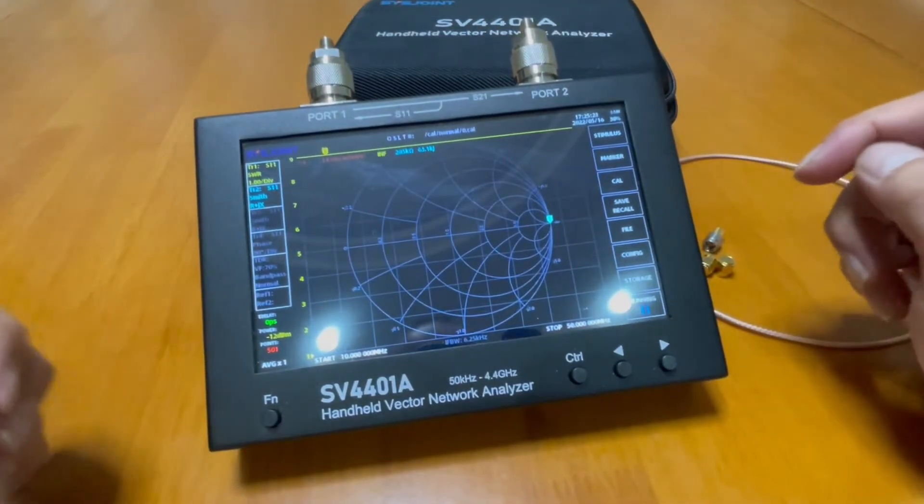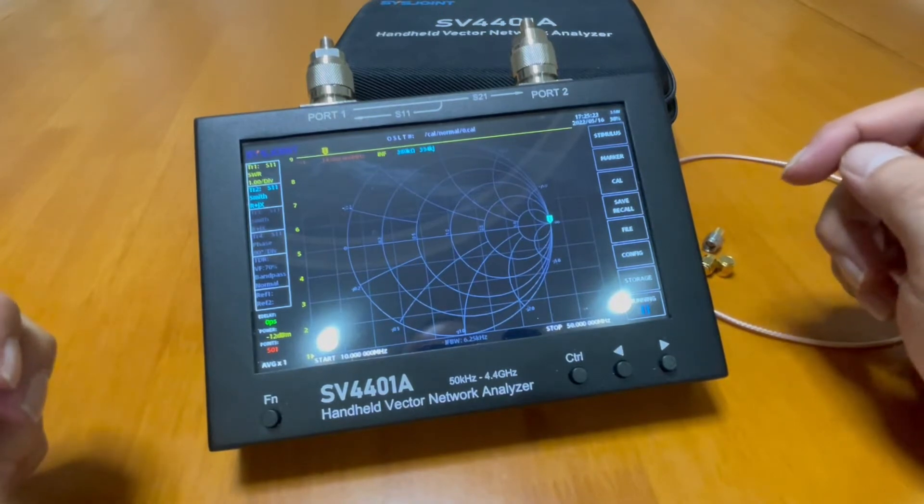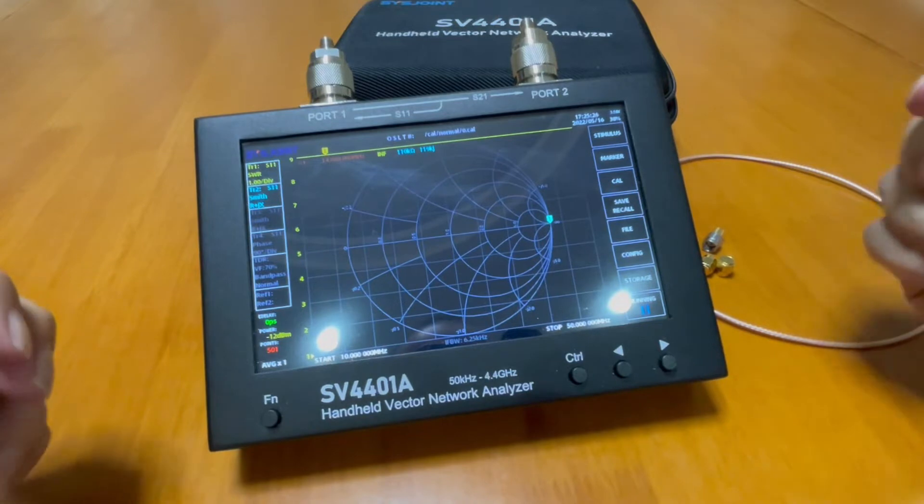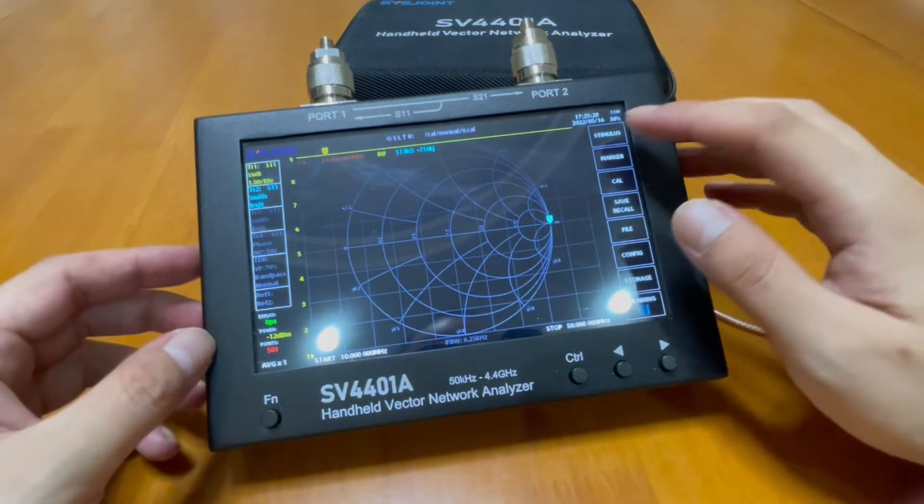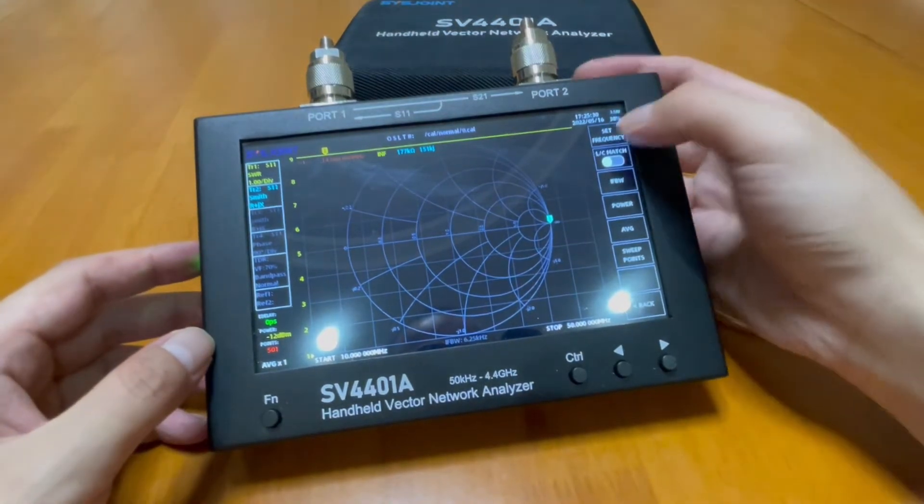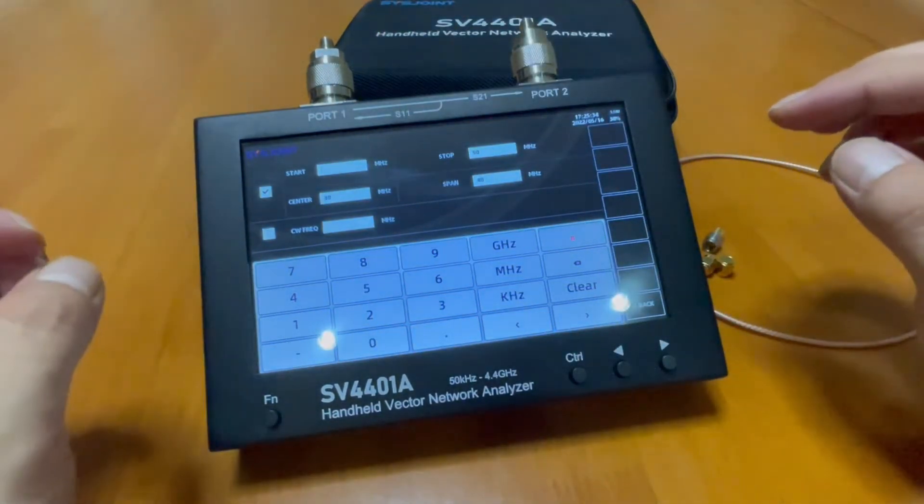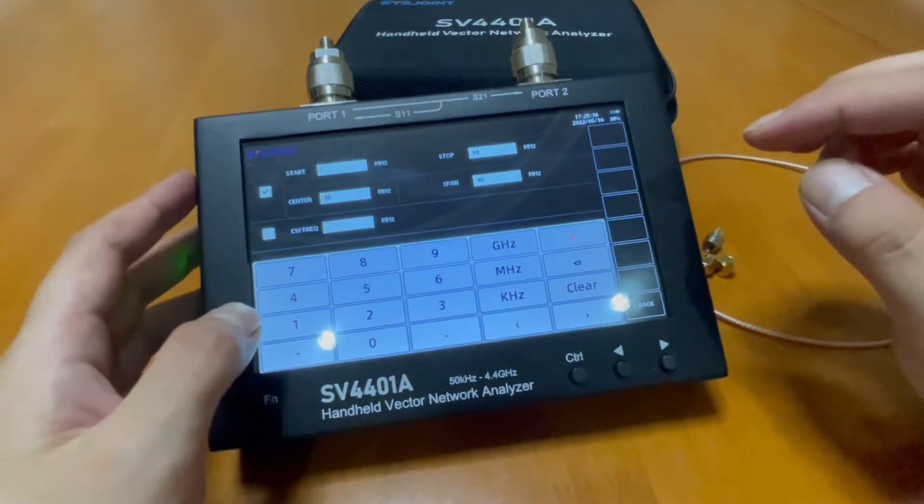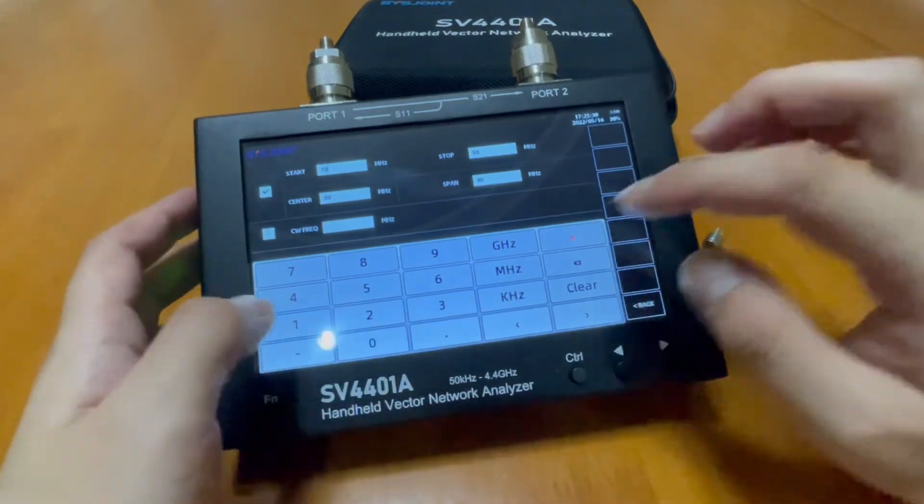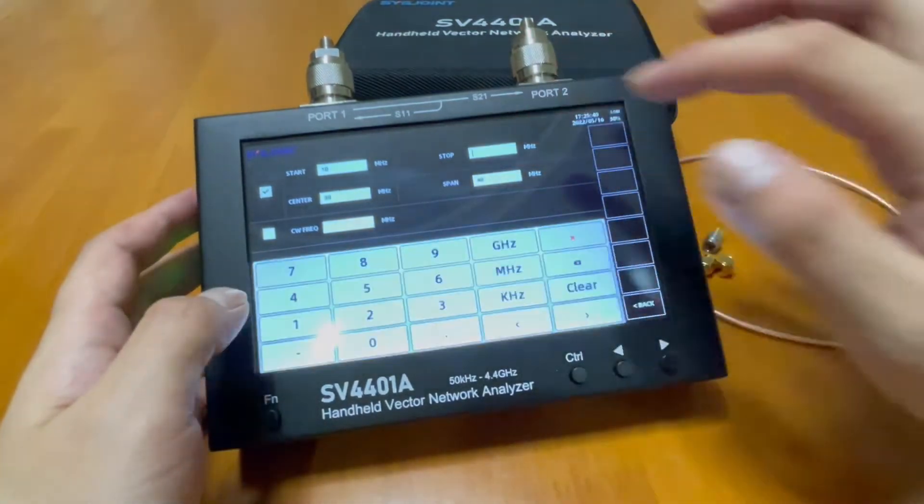After it turned on, what you want to do is always set the frequency range you're going to operate on, and what you're going to calibrate is also on the frequency range. We click on stimulus and set frequency. Let's say I want to calibrate on and operate on the frequency range from 10 megahertz to 50 megahertz.